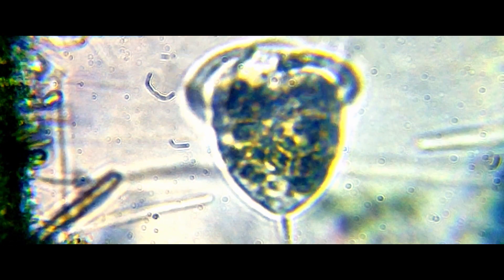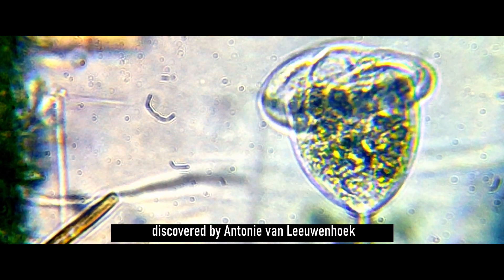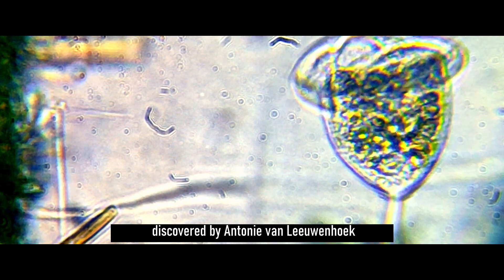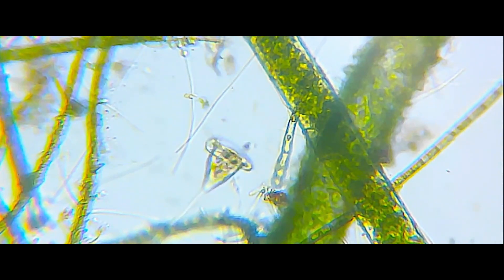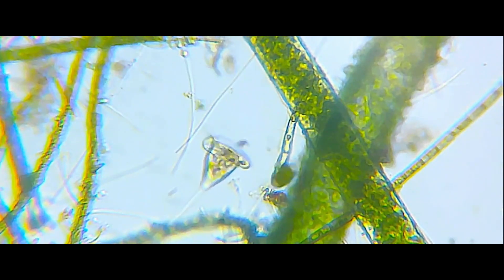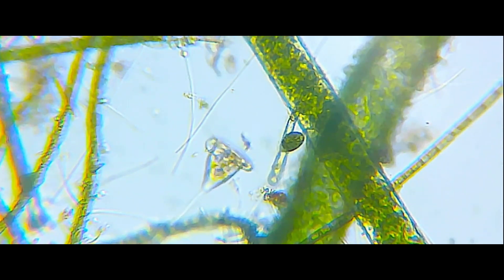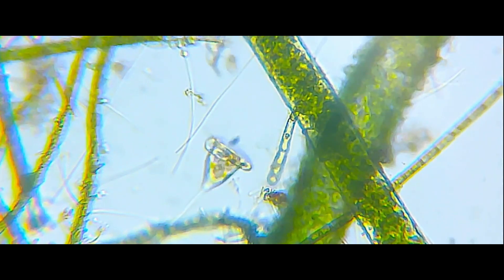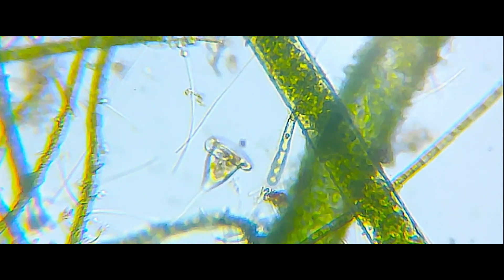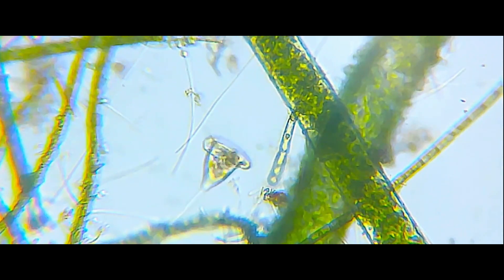The vorticella was first observed by Antoni van Leeuwenhoek, some scientist guy who invented microscopes or something. By today's knowledge, it was an easy discovery, since if you take a sample from any freshwater pond, lake or something, it's almost guaranteed that you will find some of them on a piece of moss.